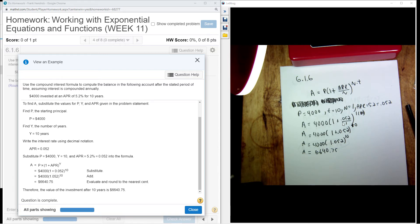So then I start simplifying it. This is n times t, which is going to be 1 times 10, which is 10 for the exponent. And I have 0.052 divided by 1, which is going to be 0.052.